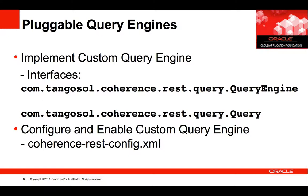Pluggable query engines. We added support to allow users to plug in their own query engines. To use a custom query engine, the user must implement two interfaces: the query engine interface and the query interface. When implementing your query engine, you can query from not only the Coherence cache but also other data sources such as a database. Once you implement your query engine, you need to configure Coherence REST in the config.xml file to define and use the custom engine.